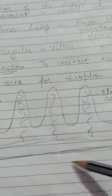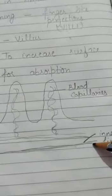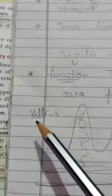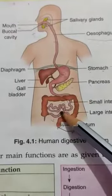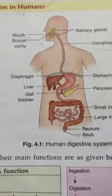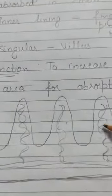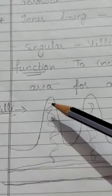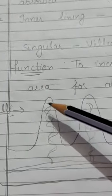Mostly this absorption takes place in the small intestine. This is the figure of the small intestine, showing the inner lining. The inner lining of the small intestine has finger-like projections, known as villi — singular: villus.